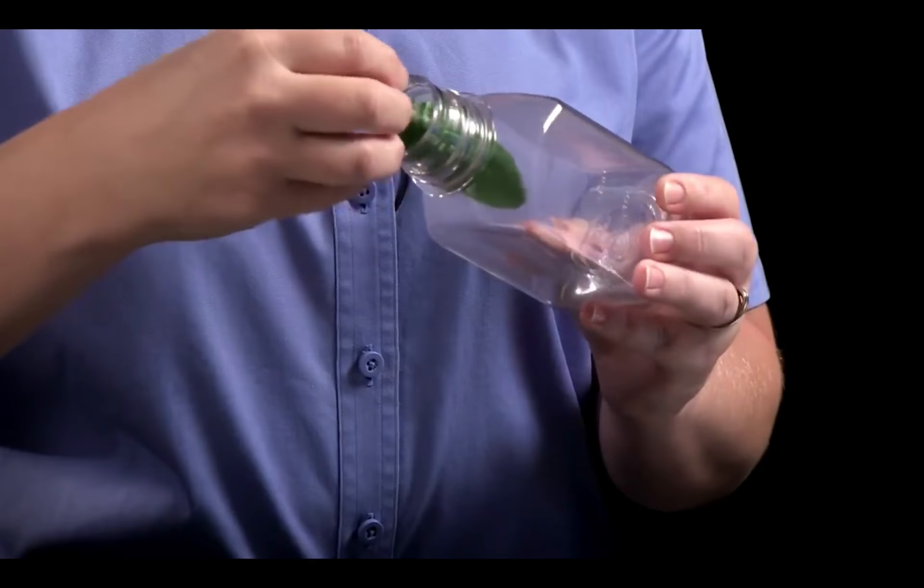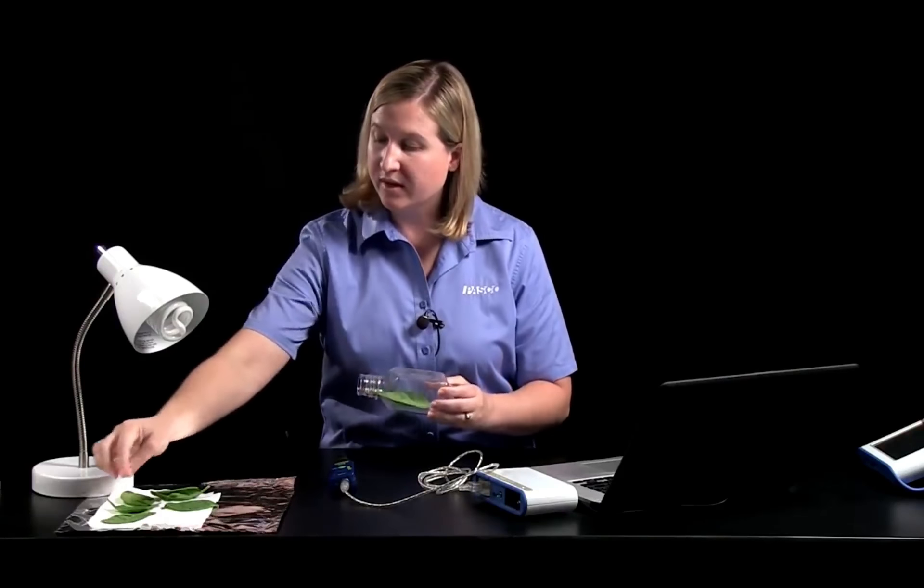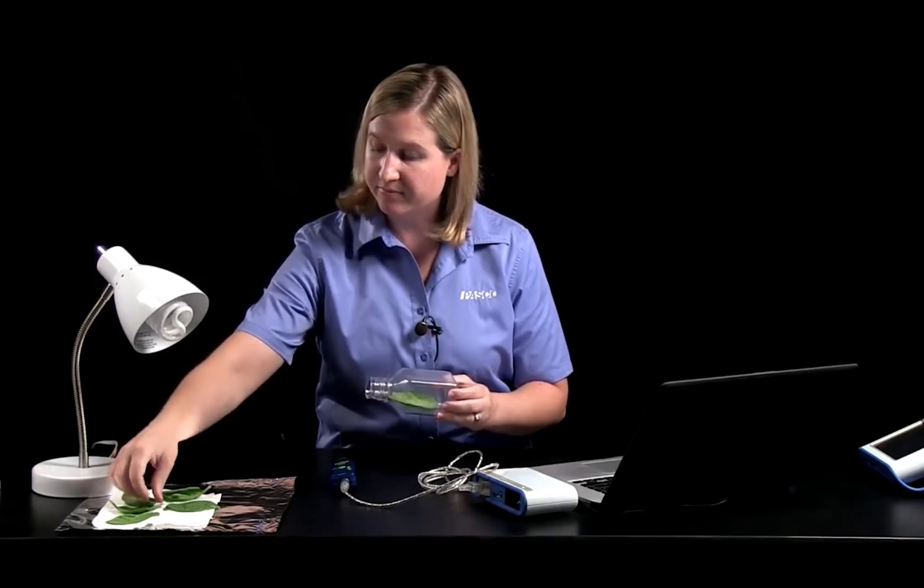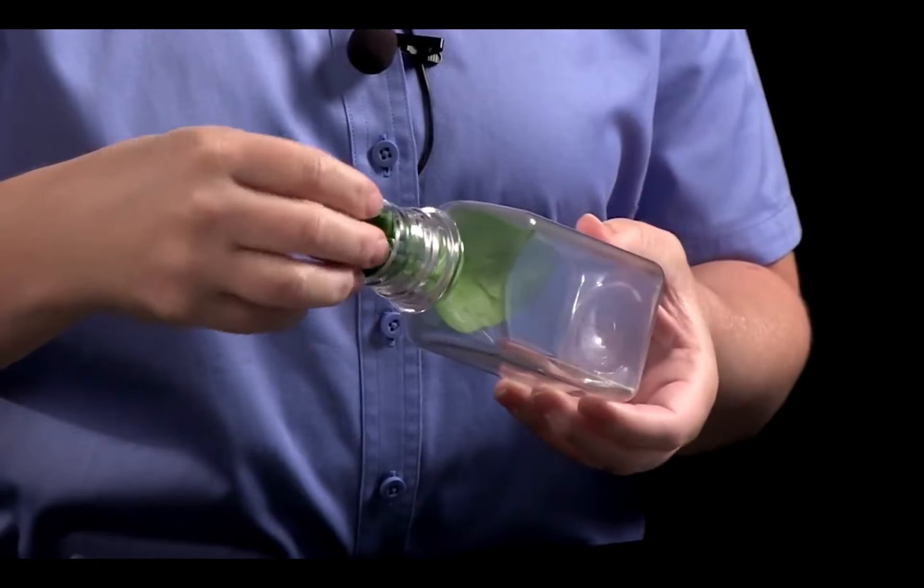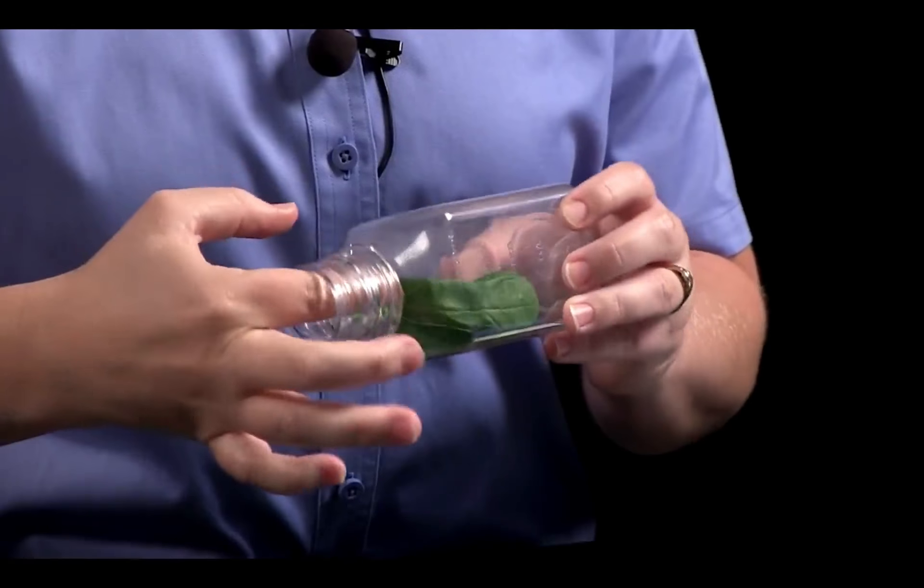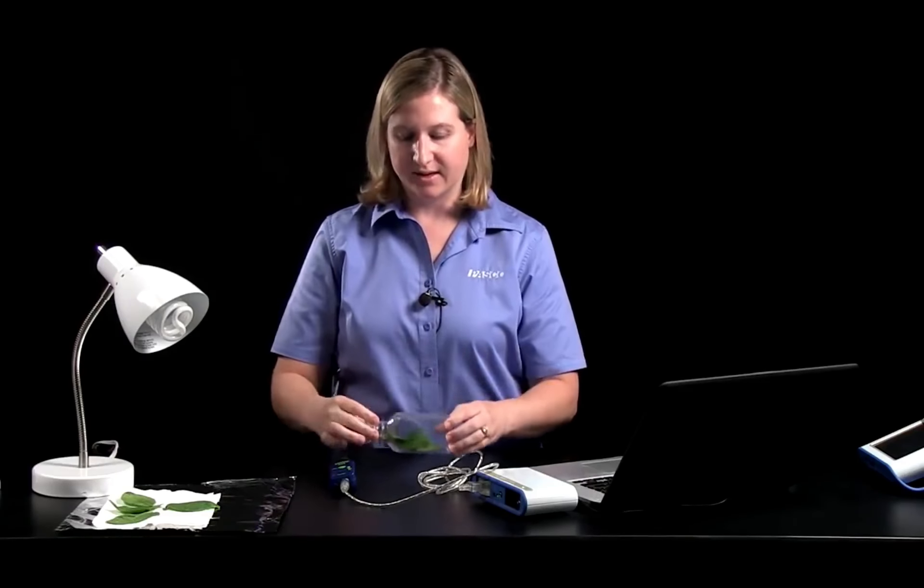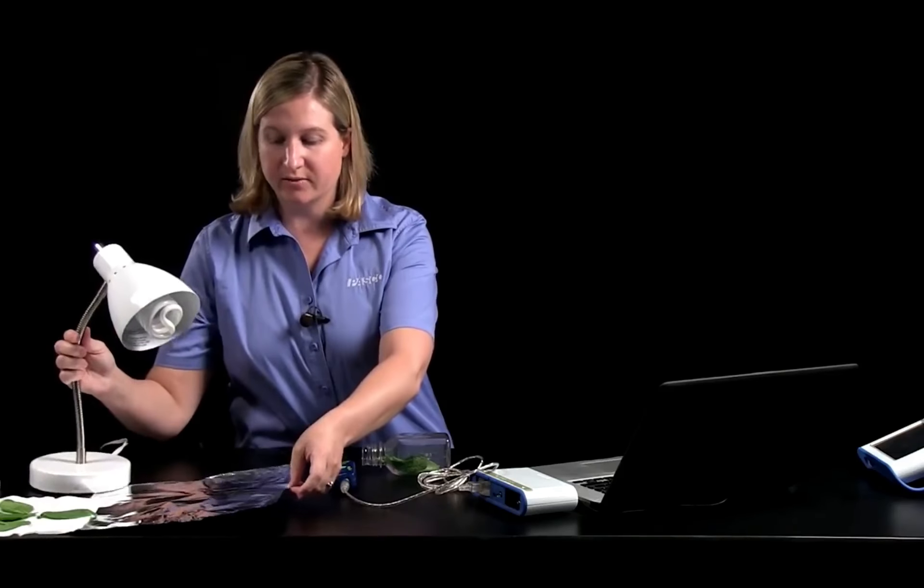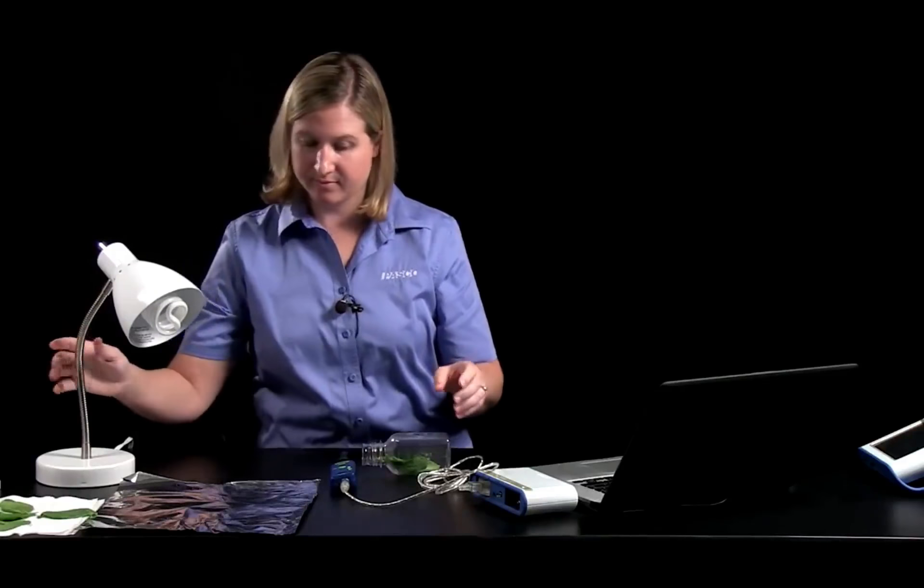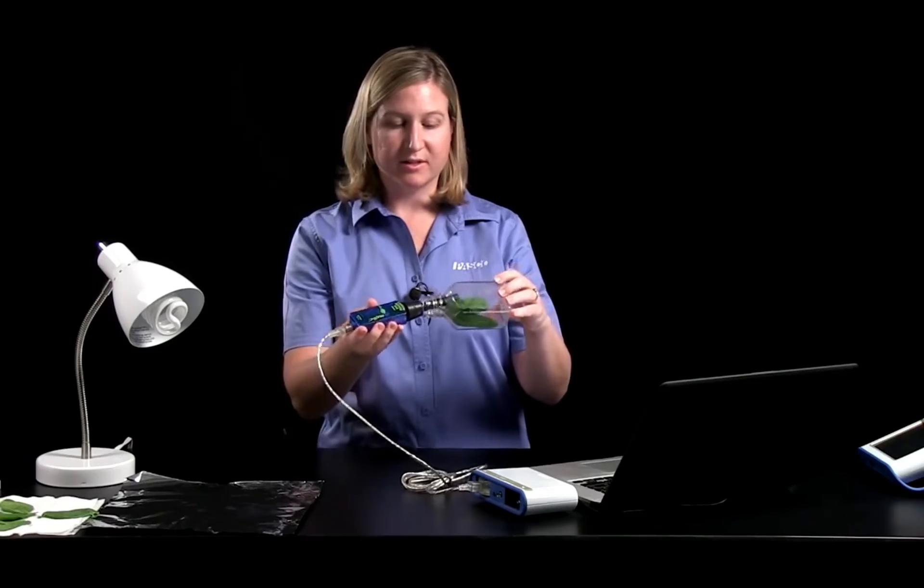I've gently blotted the leaves so that they're mostly dry. And ideally, we would have the spinach leaves lay flat. So I'm going to put spinach leaves just through the opening of the bottle, and I'll go ahead and put a second one in. I'll lay them flat just to get the maximum amount of surface area that can be exposed to the light.